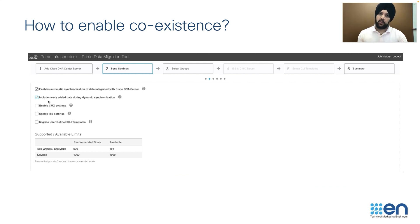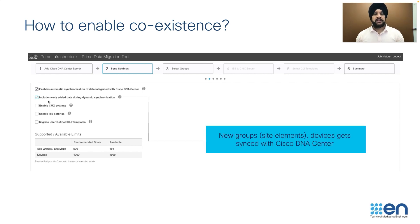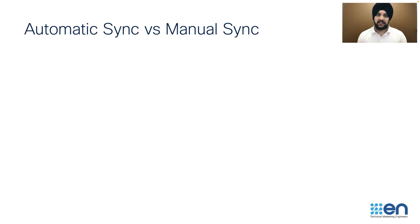Now the question comes: how do you enable coexistence? When you're actually running the Prime data migration tool, in the second step of sync settings, you're given two checkboxes. The first checkbox enables synchronization of existing sites that you have migrated from Prime to DNA Center, and any modification or update done to those sites gets migrated automatically to Cisco DNA Center. The second checkbox is for anything new that gets added to those sites — like any new device, any new building, or floor that gets added — that will automatically get synced with Cisco DNA Center. Now let's get into more details on what will automatically sync and what requires a manual trigger of the migration tool.